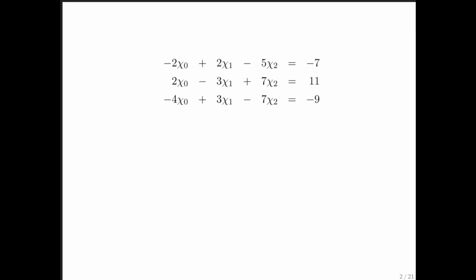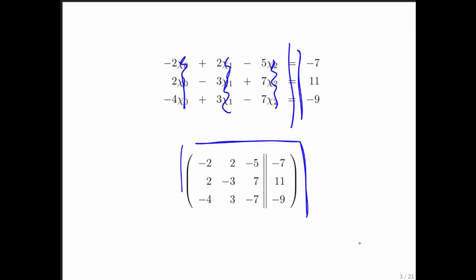Here we have our prototypical system of linear equations. We can represent this with an appended system where, as before, all we did was we got rid of the variable names and put a line there, or in this case a double line, to separate the right-hand side from the rest of the equations. We're just going to manipulate this appended system from here on.